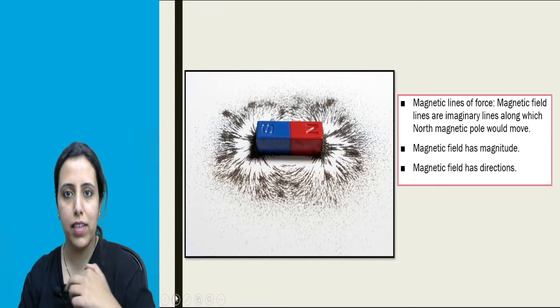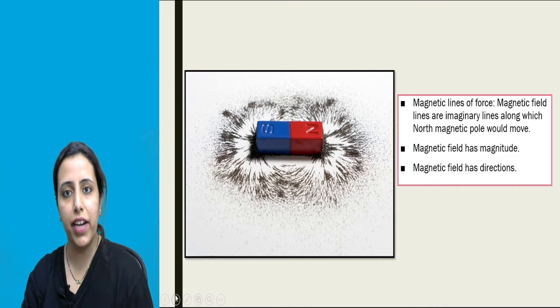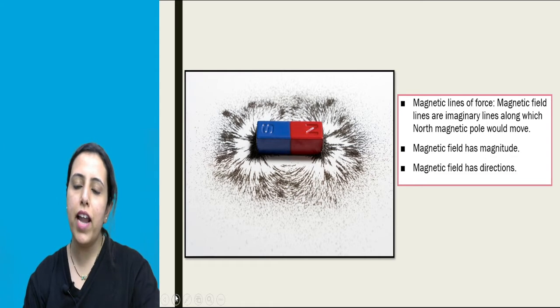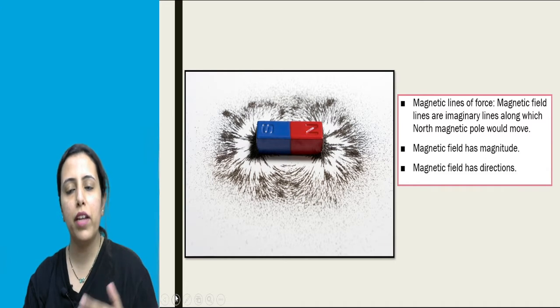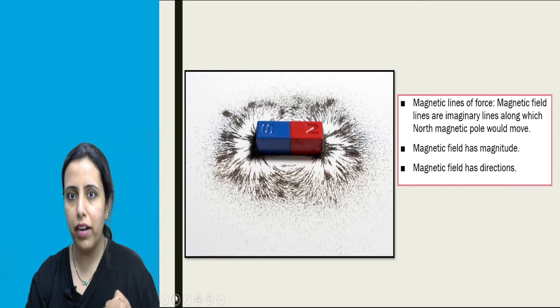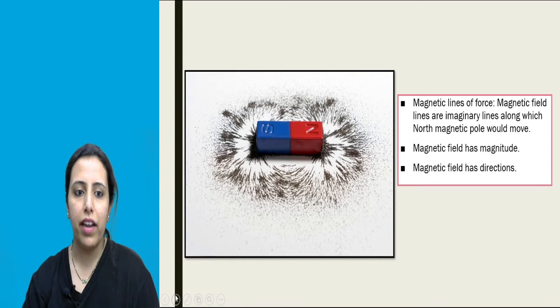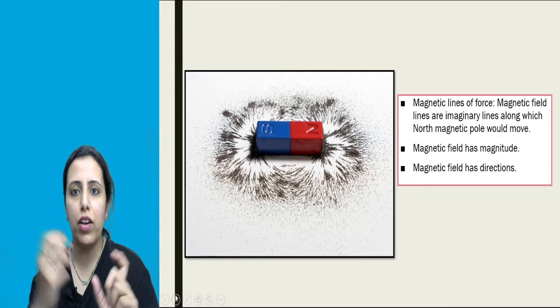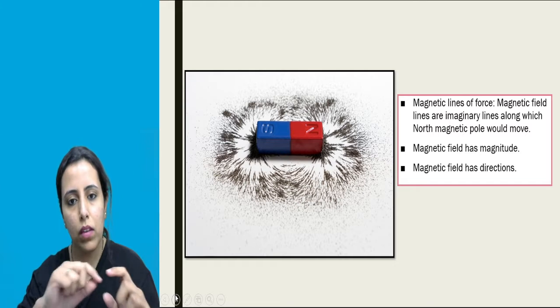Magnetic field lines. How do we indicate magnetic lines of force? Magnetic field lines are imaginary lines along which north magnetic pole would move, from north to south. The black spottings are nothing but iron filings. As I said, magnet attracts the iron because it is a property which is magnetism.